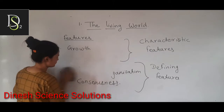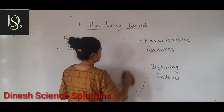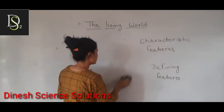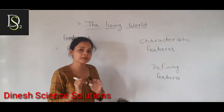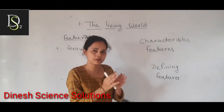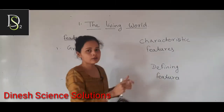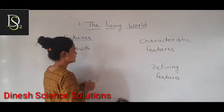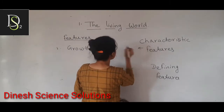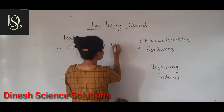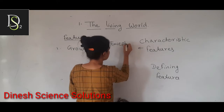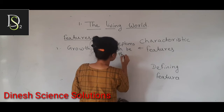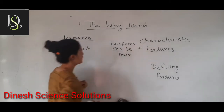Growth is a characteristic feature. A characteristic feature means there are some exceptions — it is not an absolute defining feature. It means if this feature is present, we can say it is living, but sometimes there are exceptions. So there can be exceptions in growth.